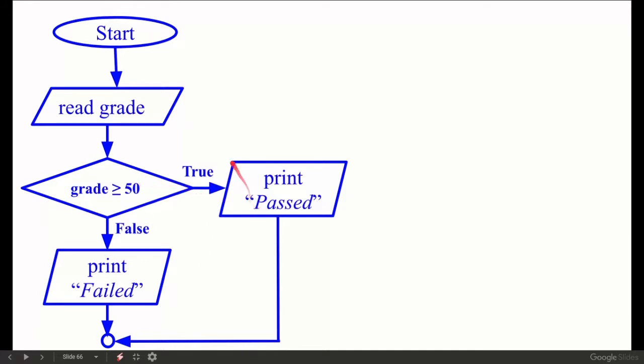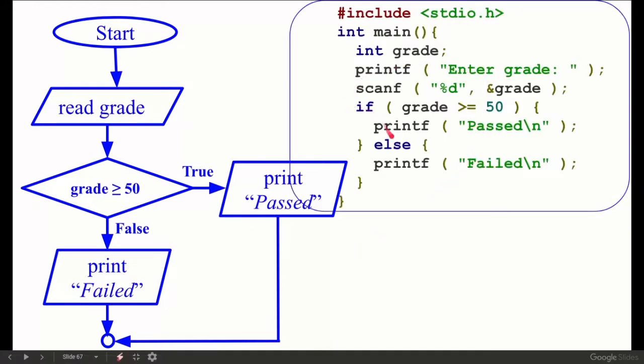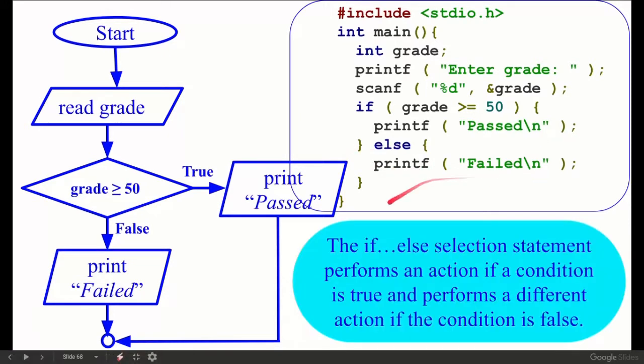Now a second example. If the condition is true, an action will also take place, and if false, an action will also take place. In the previous example, true will print passed, but false will not print. But in this flowchart, we see true will print passed, and false will print failed. For this program we will write if with else also.